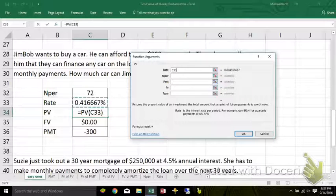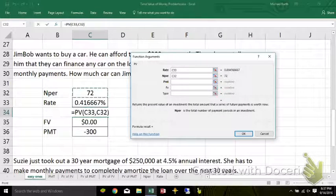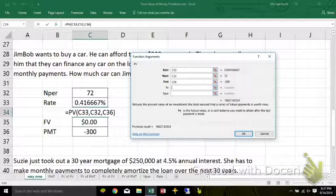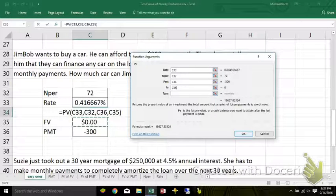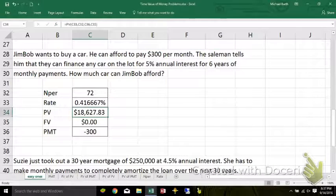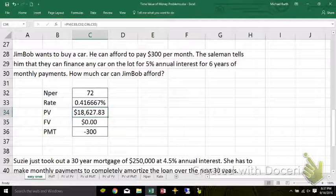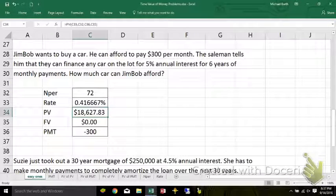There's our rate. Number of periods. Payments. Payments $300 a month. Future value zero. Click the go button. That means he could borrow $18,627.83 and the payments on that at 5% annual interest, 1/12th of 5% monthly interest, would be exactly $300.